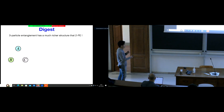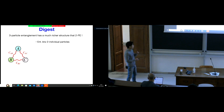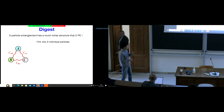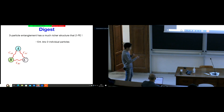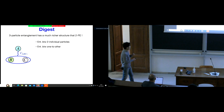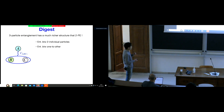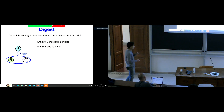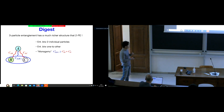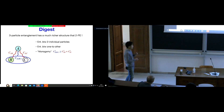If we have three particles A, B, C, we can talk about entanglement between two individual particles: A and B, B and C, and A and C — the usual two-particle entanglement. But we can also define a new kind of entanglement: entanglement between particle A and the rest of the subsystem. This is called one-to-other entanglement, and it is new to the multi-particle system.